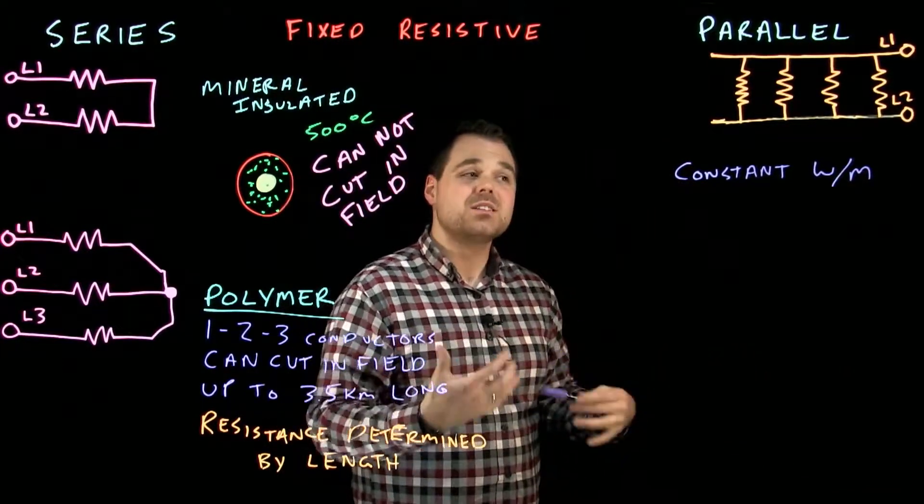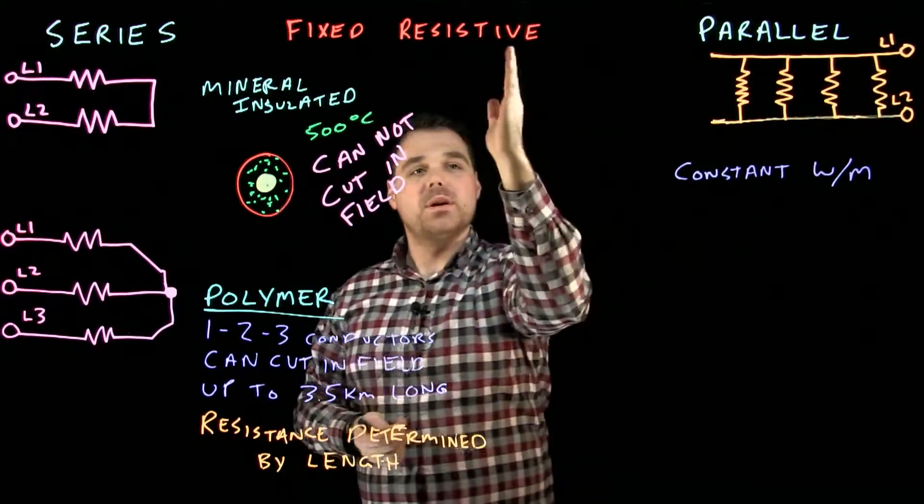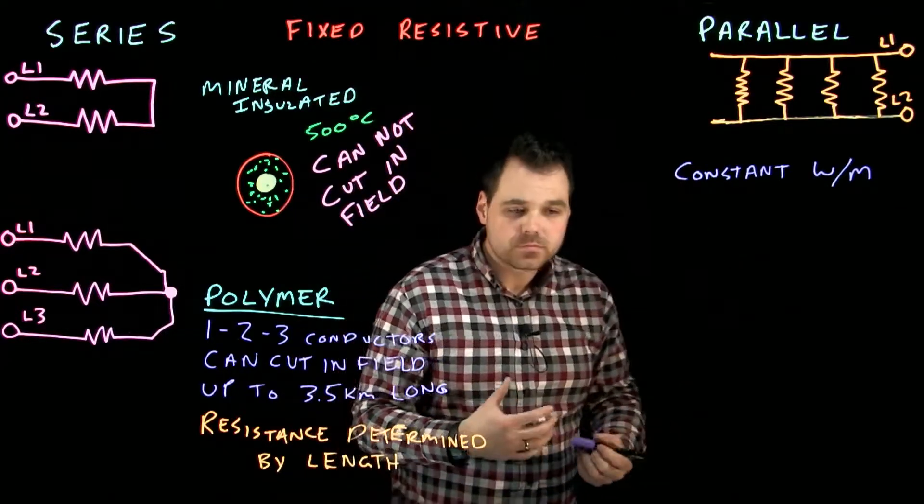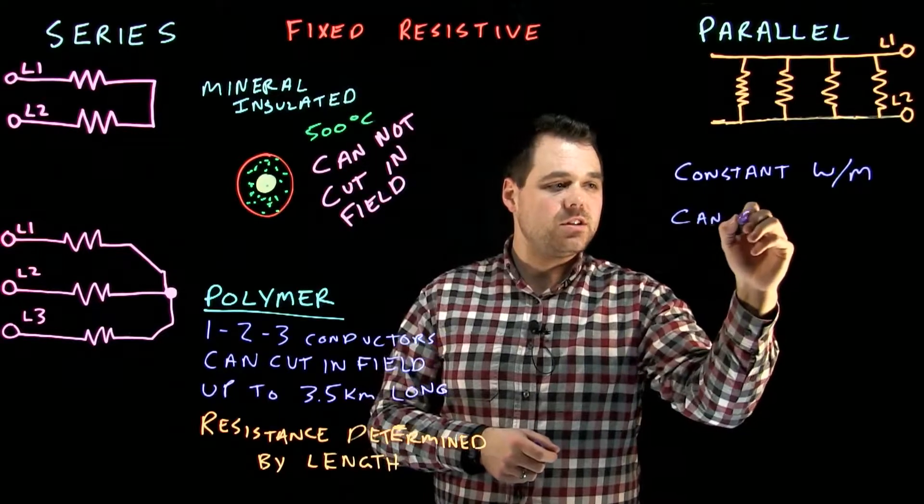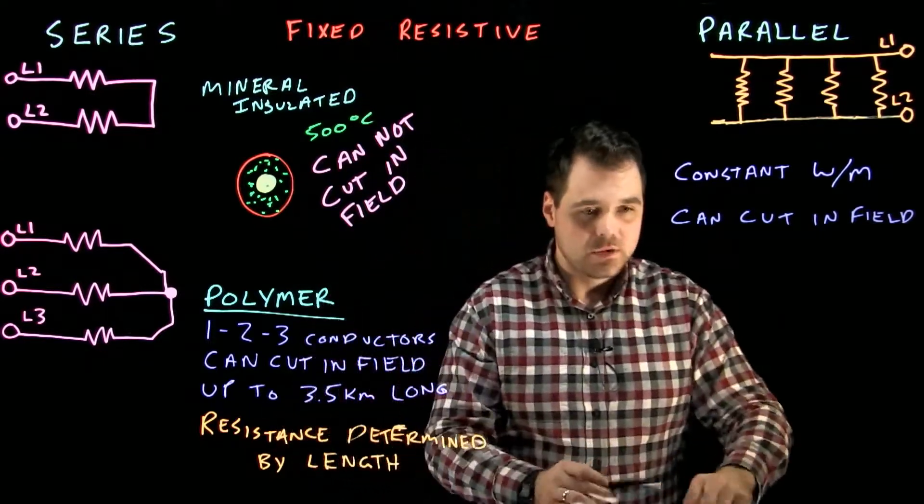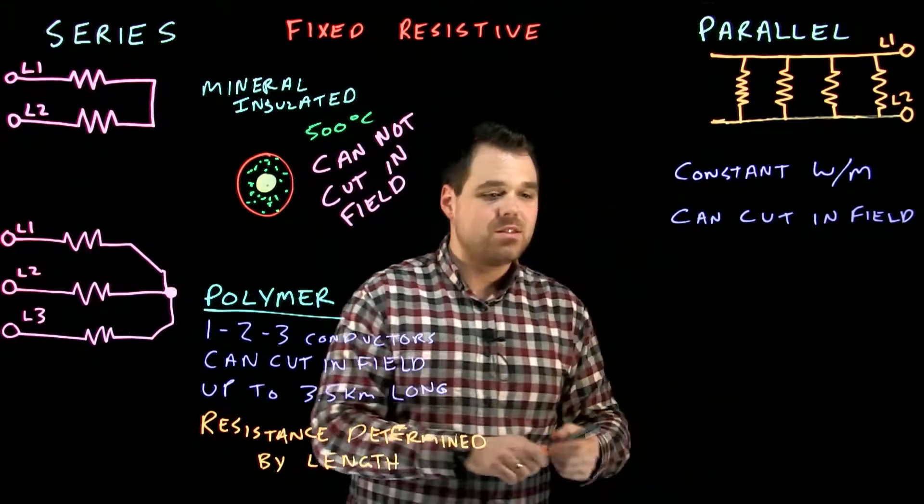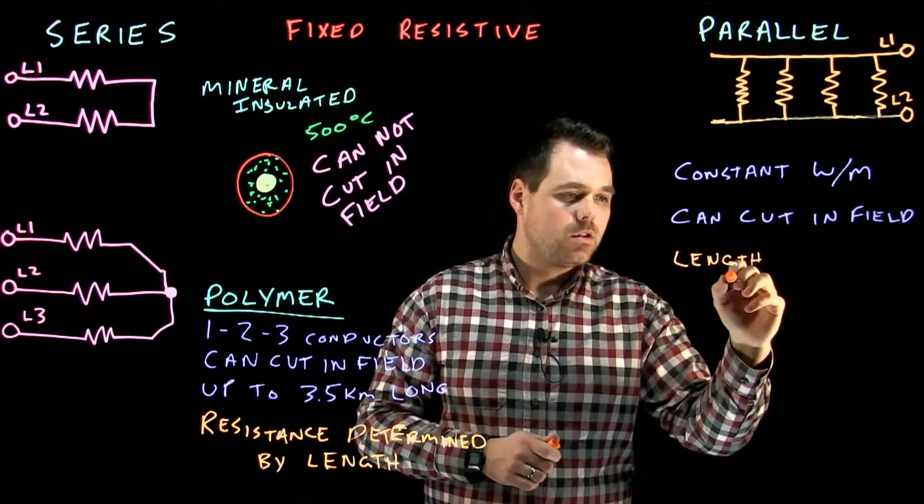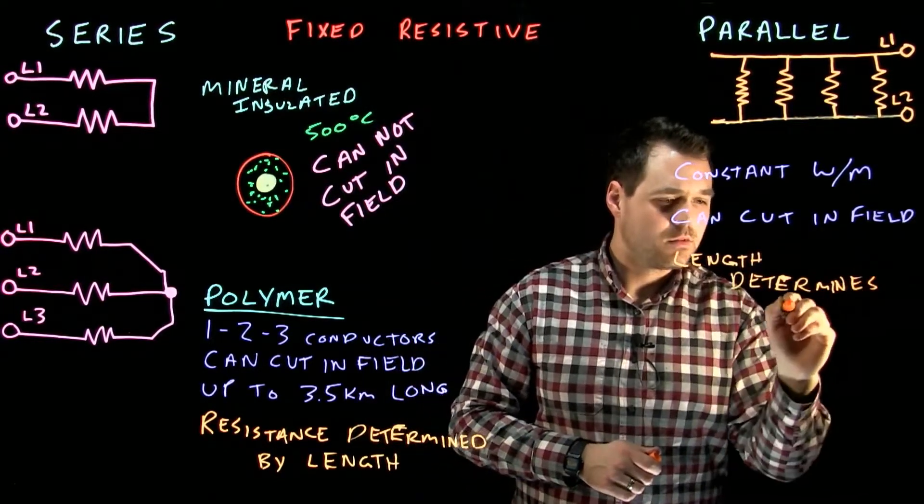So the length is actually going to affect the amount of current. If I have it shorter, less path for current to flow, less current. If I make it longer, more paths for current to flow, I'm going to have more current. So we have to take that into account when we are sizing it. One nice thing about this is I can cut it in the field. This is typically going to be that polymer type, so we can have it as long as we need. We can cut it in the field. And the length, like we discussed, length determines the current.